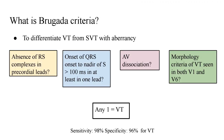There are famous criteria for differentiating VT from SVT with aberrancy. Brugada's criteria states that if any one of four criteria is present, it is likely VT. These are: (1) absence of RS complexes in precordial leads, i.e., positive or negative concordance; (2) onset of QRS to nadir of S more than 100 ms in at least one lead; (3) presence of AV dissociation; and (4) VT morphology criteria in both V1 and V6. If any one is present, VT is more likely.